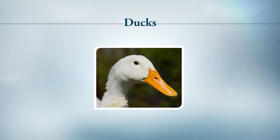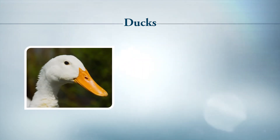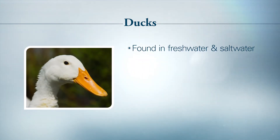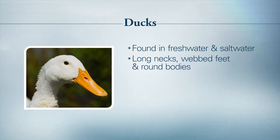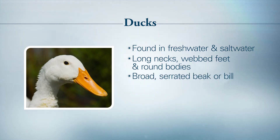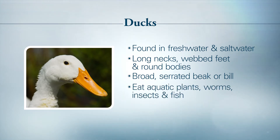The duck is the common name for many species of the waterfowl family, which includes swans and geese. This aquatic bird can be found in both freshwater and seawater. Ducks have relatively long necks, webbed feet, and typically round bodies. The beak or bill tends to be broad and serrated, or contains slits, which makes it easier to sift through water as they find food such as aquatic plants, worms, insects, and fish.